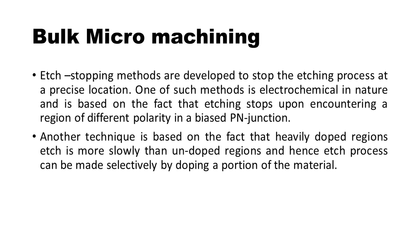Etch stopping methods are developed to stop the etching process at a precise location. One such method is electrochemical in nature and is based on the fact that etching stops upon encountering a region of different polarity in a biased p-n junction. Another technique is based on the fact that heavily doped regions etch more slowly than undoped regions, and hence the etch process can be made selectively by doping a portion of the material.